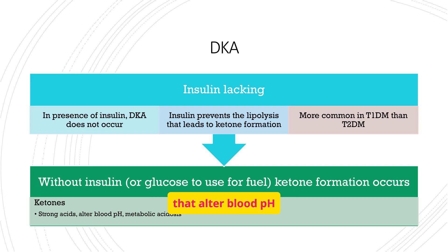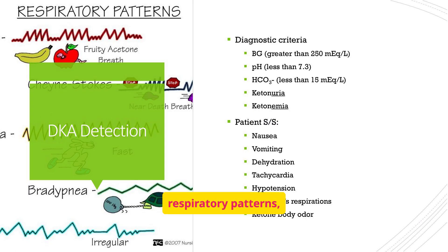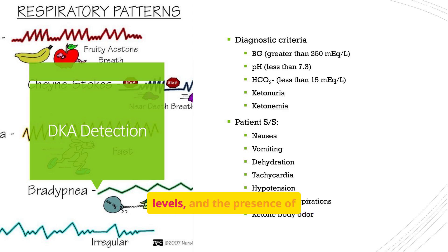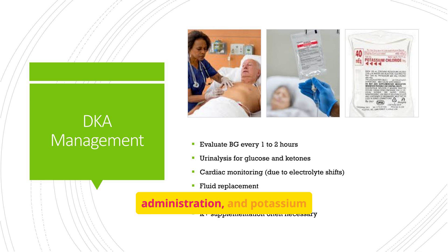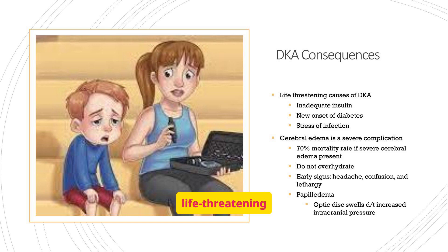Ketones are strong acids that alter blood pH and cause metabolic acidosis. DKA is more common in type 1 diabetes and is characterized by Kussmaul's respirations and fruity acetone breath. Diagnostic criteria include high blood glucose, low pH and bicarbonate levels, and the presence of ketones in the urine and blood. DKA management involves evaluating blood glucose, urinalysis, cardiac monitoring, fluid replacement, insulin administration, and potassium supplementation. DKA can have life-threatening consequences, including cerebral edema, so early recognition is essential.